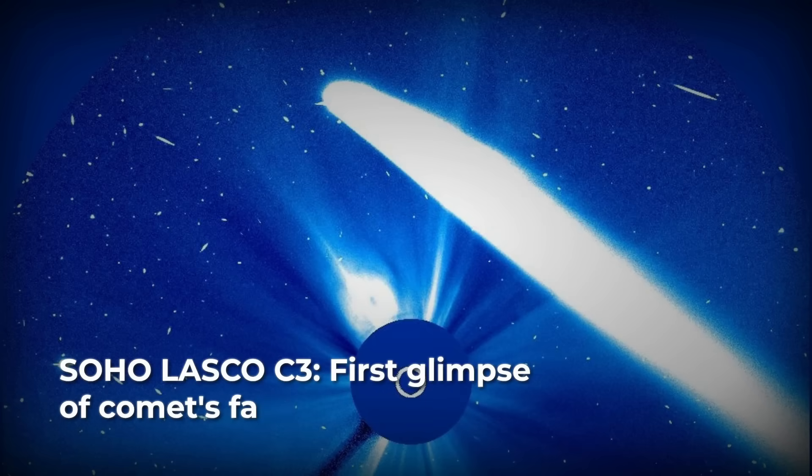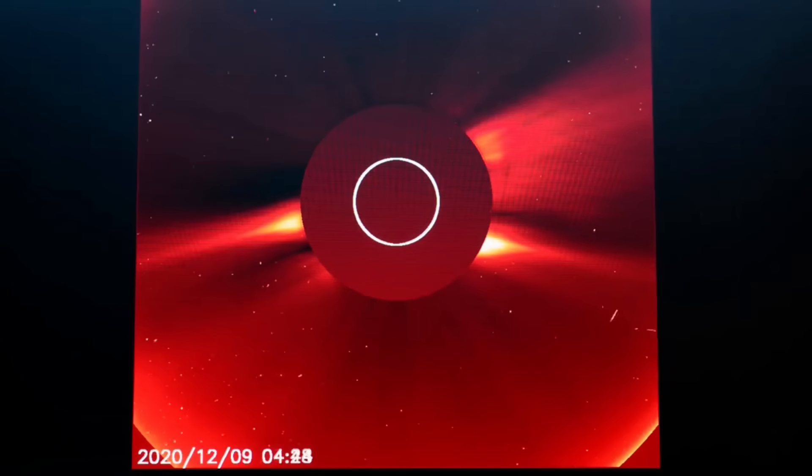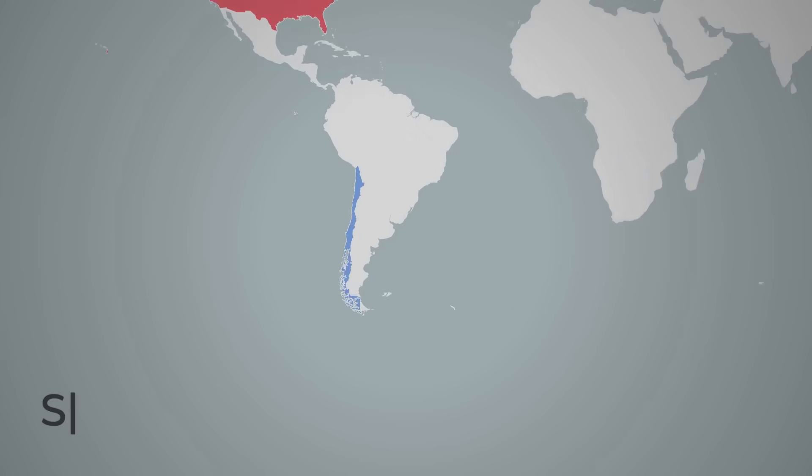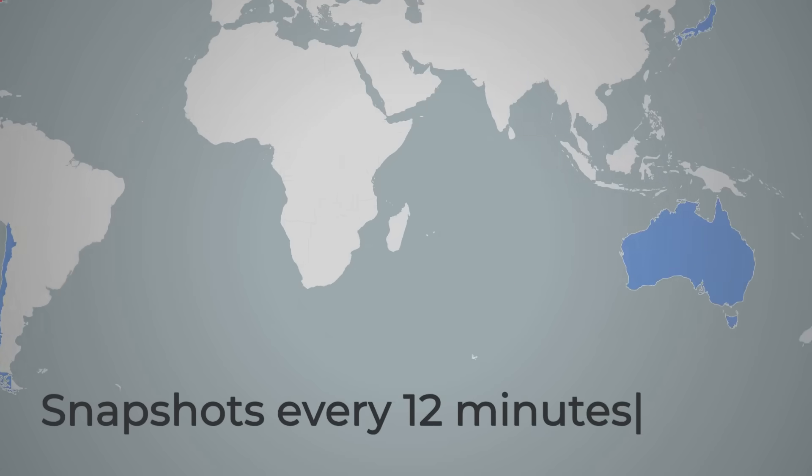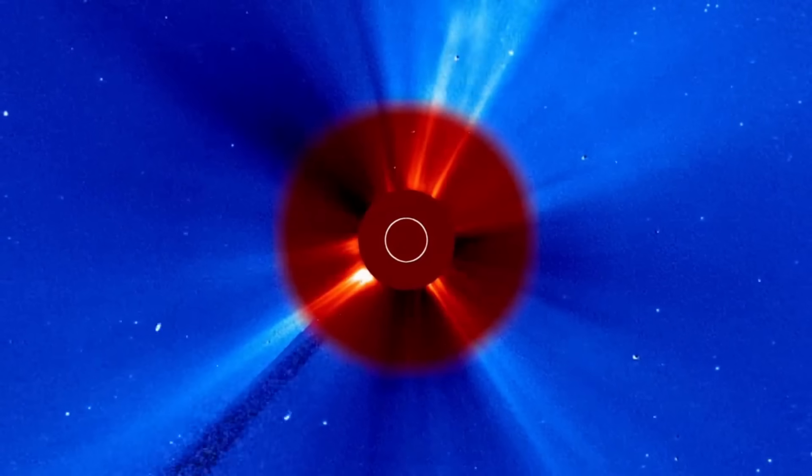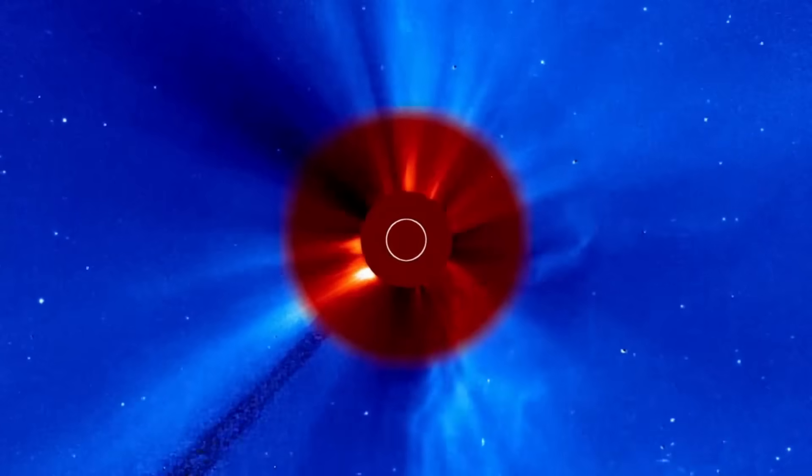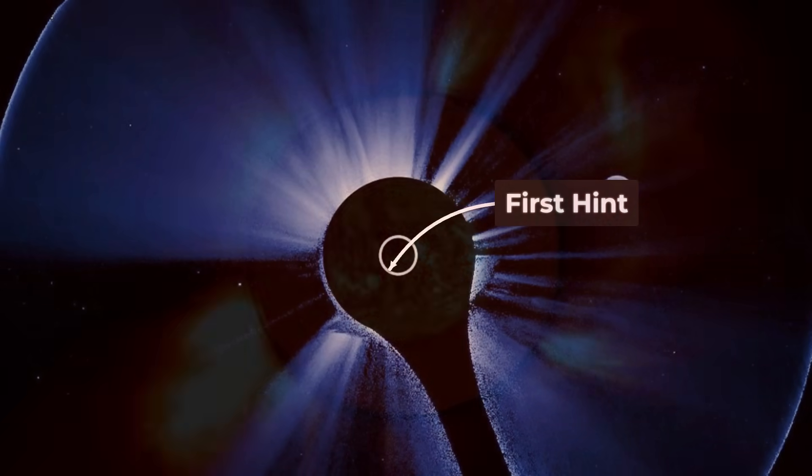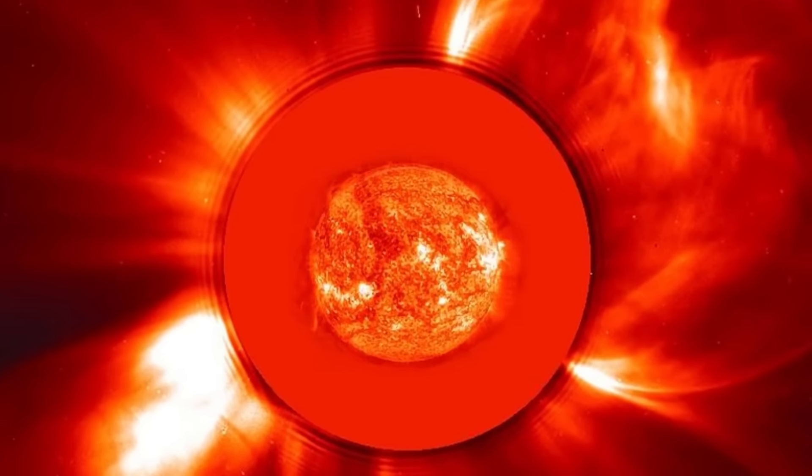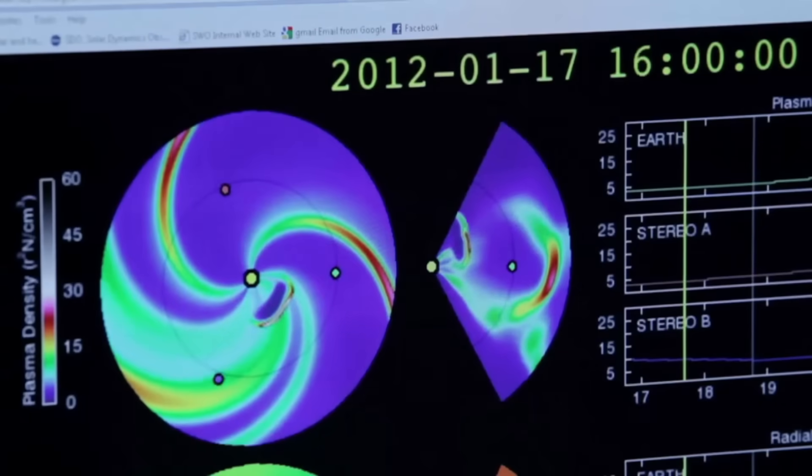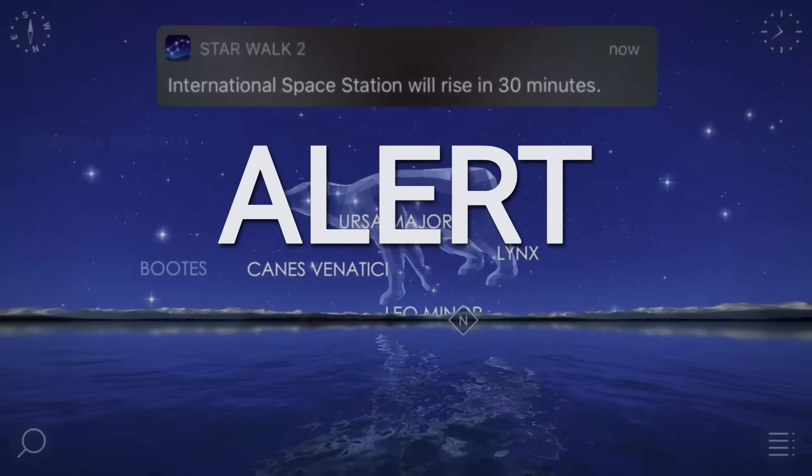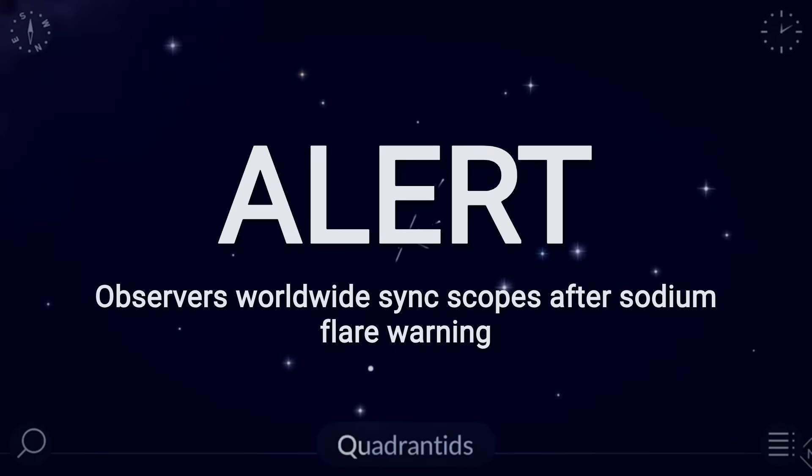Recovery begins with a single image, SOHO's LASCO C3 coronagraph, uploading its latest frame to the Quick Look archive. Every 12 minutes, a new snapshot appears, and comet hunters around the world scrutinize each pixel for signs of 3I-Atlas. The first hint could be a faint point of light, a sudden brightening, or a subtle distortion in the solar background. When the data stream shows anything unusual, an unexpected spike, a new fragment, a sodium flare, alerts ripple through the observing community.